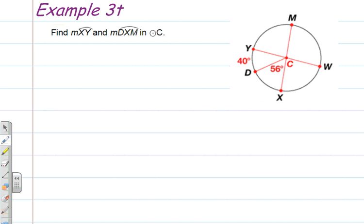Example 3T: find the measure of arc XY and the measure of arc DXM. We're going to do that right now. We're going to first identify arc XY on the diagram. Arc XY goes from here across D and over to Y.